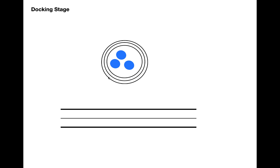I'm going to be rattling off a lot of different names, but don't worry about them right now. As we go through the process of synaptic fusion, we'll describe what each protein does and how they all interact. Inside the vesicle, the first protein we see is synaptotagmin.